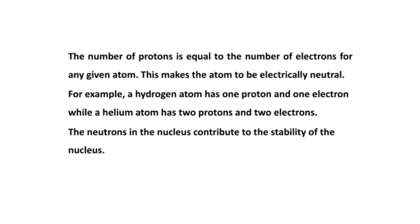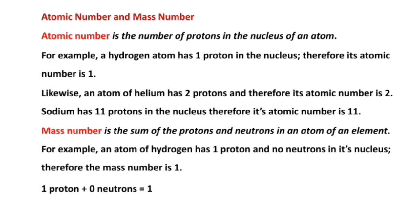You need to know that the neutrons in the nucleus contribute to the stability of the nucleus. Atomic number is the number of protons in the nucleus of an atom, meaning the number of protons equals the atomic number. For example, a hydrogen atom has one proton, therefore its atomic number is one. Likewise, helium has two protons, therefore its atomic number is two. Sodium has 11 protons, therefore its atomic number is 11.